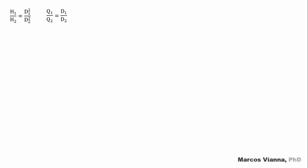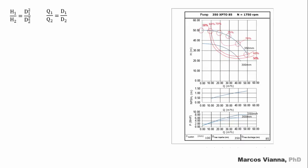It can be obtained from a known similar curve. The pair of values Q1, H1, which belongs to D1 impeller, will turn into the pair of values Q2, H2, which belongs to D2 impeller. Note that the points slide over parabolas.